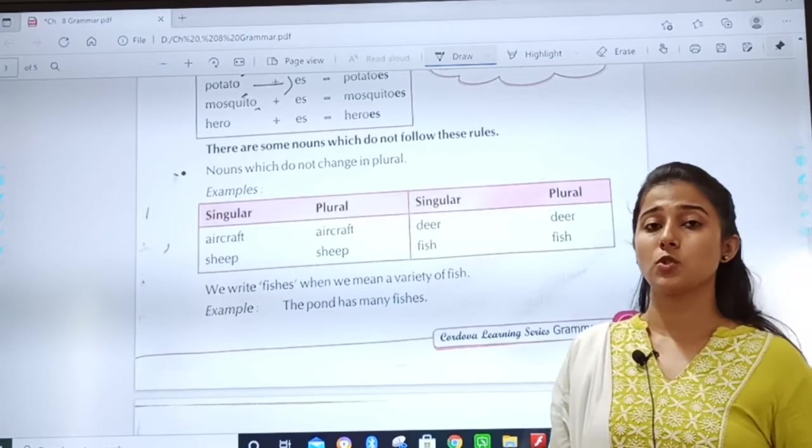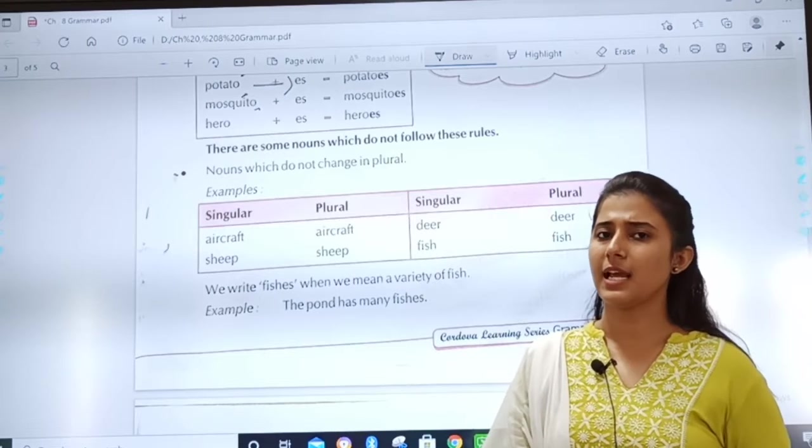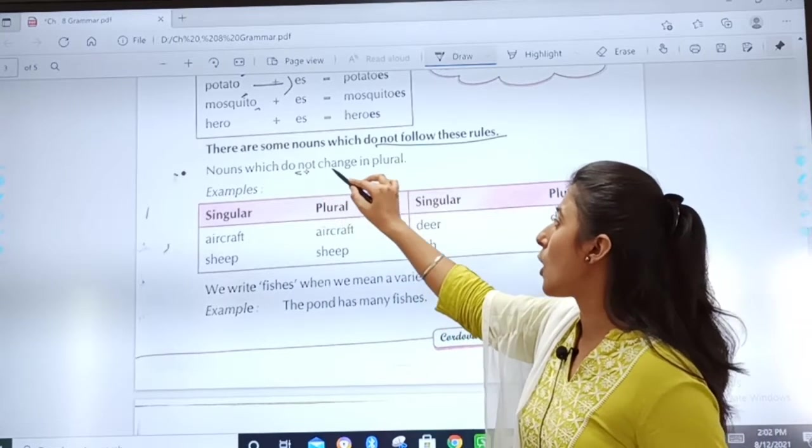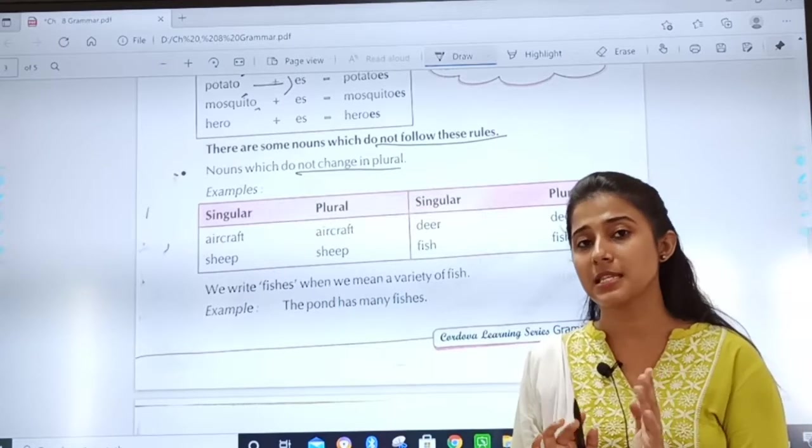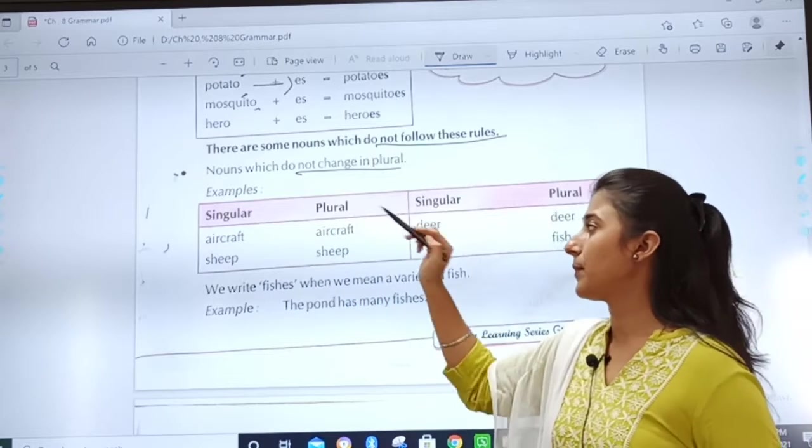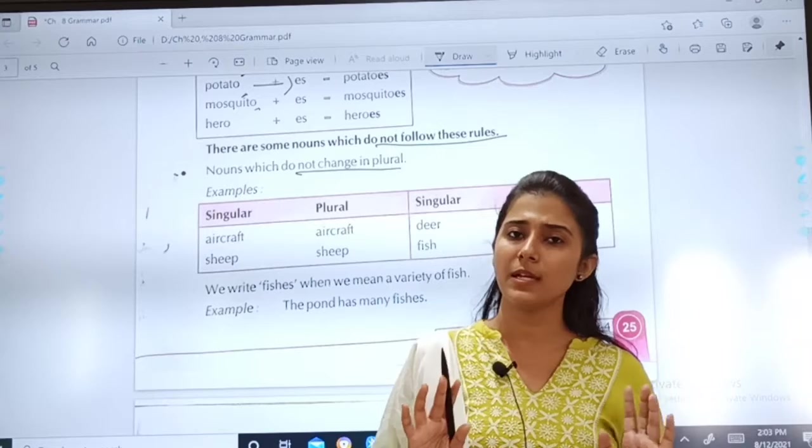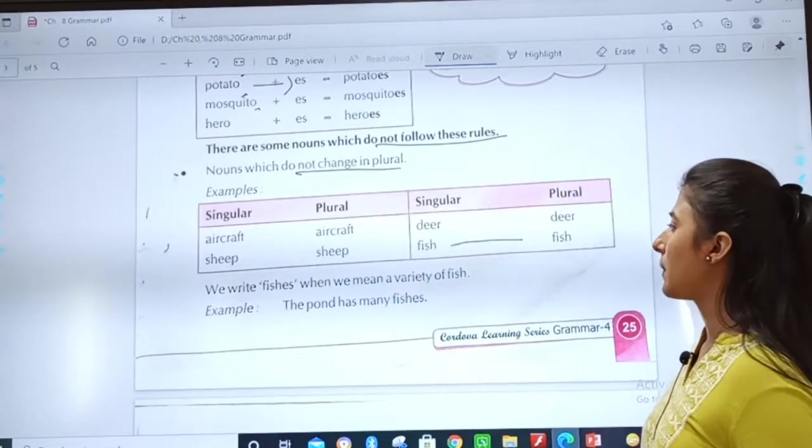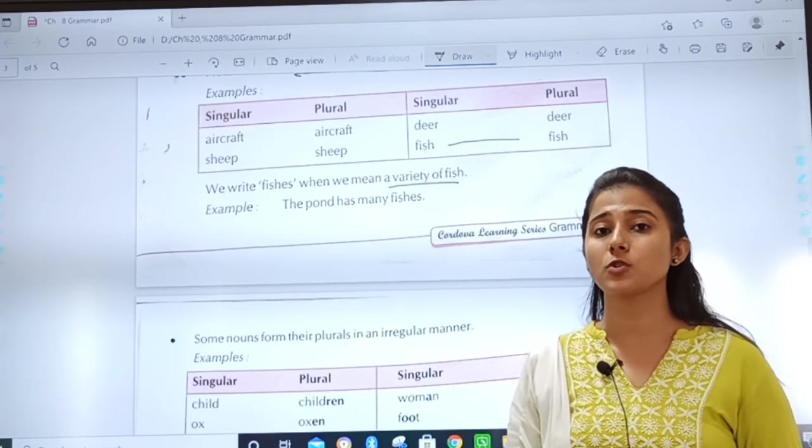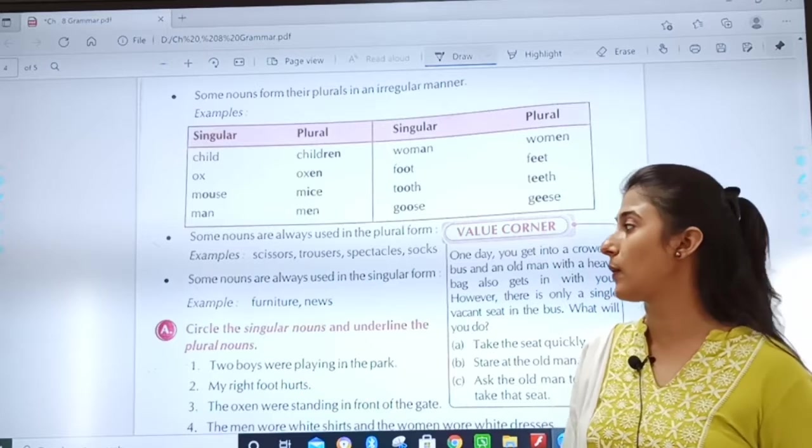So, there are some nouns which do not follow rules. See, till now, whatever we studied, every box was having some rule based on the last letter. Right? But, now, there are some nouns which do not follow the rules. Let us see the examples. Nouns which do not change in plural. There are some nouns which remains as it is. Aircraft. What will be the plural of aircraft? Aircraft only. We do not have to change. Sheep. Sheep. You have heard flock of sheep. But, it is never said sheeps. Right? Deer. Deer. Plural form of deer will be deer only. And, plural form of fish will be fish only. We write fishes when we mean a variety of fish. But, when we want to say about variety of fish. Okay? The pond has many fishes. Right? Otherwise, we say a school of fish.